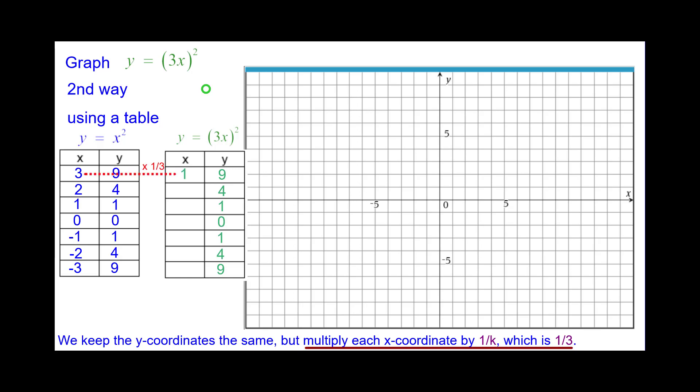The first point 3 times a third will be 1. So we'll plot the point 1 comma 9. 2 times a third is 2 thirds. So we'll plot 2 thirds comma 4. 1 times a third, 1 third comma 1. And the origin stays the same. Go ahead and finish the last 3 points. Press pause and then resume when you're ready.